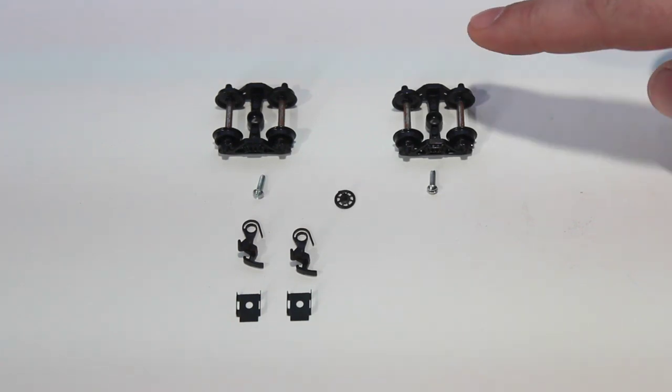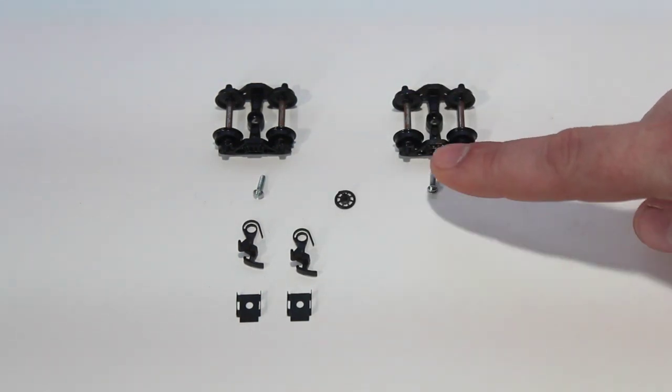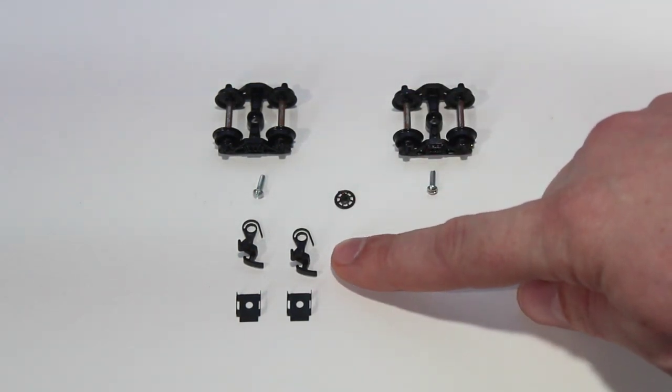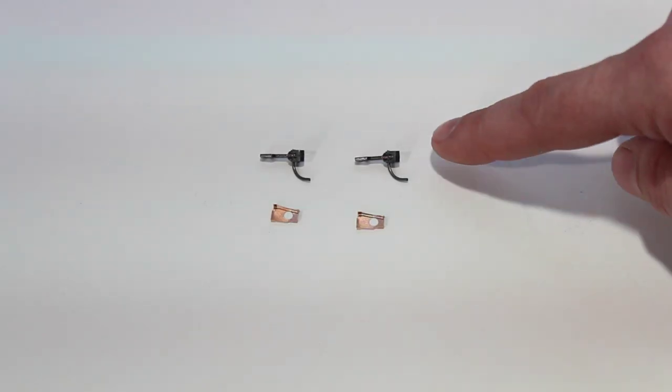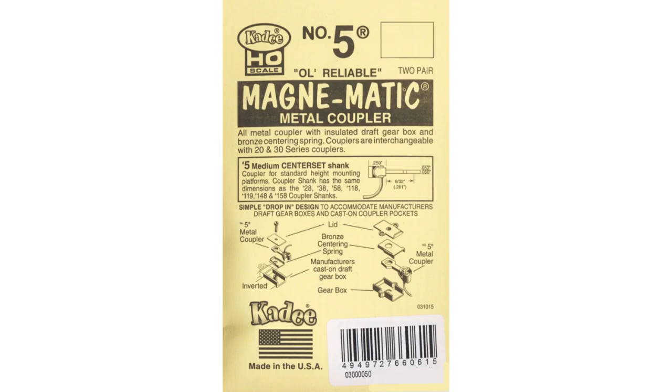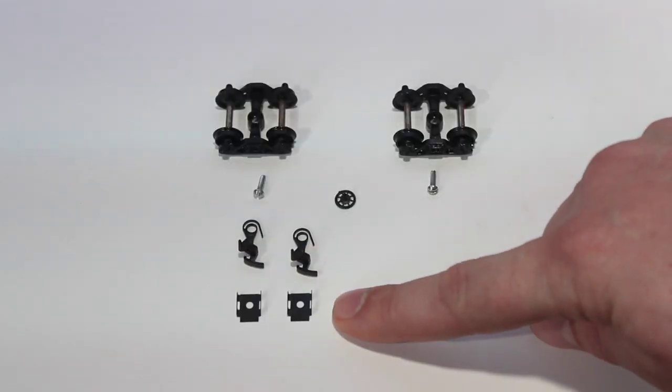Inside the bag of parts there should be two trucks, two screws for the trucks, a brake wheel, two horn and hook couplers which we will not be using, two KD number five hooks and springs, and two coupler box covers.